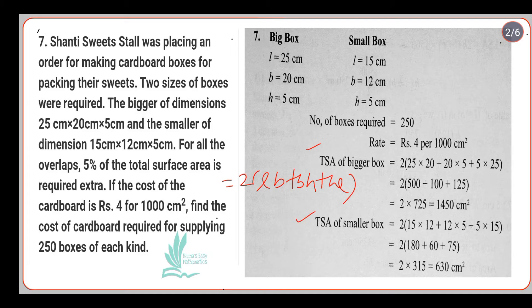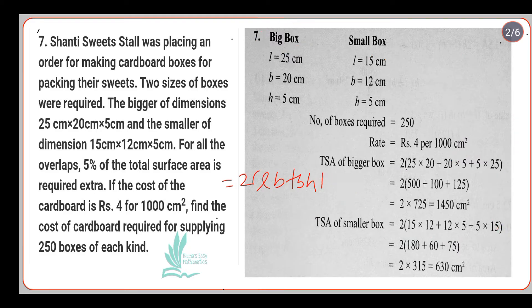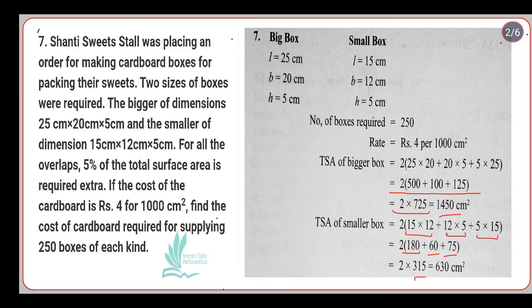Using this formula, carefully put all the dimensions of the big box as well as the smaller box. It is very important to use the BODMAS rule; otherwise you will get the wrong answer. After multiplying, I get 1450 cm² for the bigger box. Following the same pattern for the smaller box — multiply and then add 180, 60, and 75, which gives 315; multiply by 2 to get 630 cm².